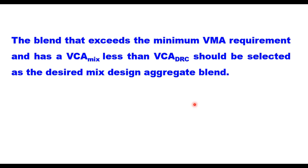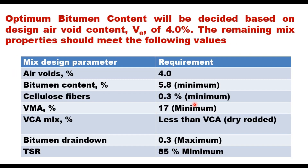Once aggregate gradation is decided, the next step is to determine the optimum binder content, selected at 4% design air voids. The remaining mix properties should satisfy: minimum binder content 5.8% (IRC SP79-2023; MORTH specification suggests 6.5%); cellulose fiber minimum 0.3%; VMA minimum 17%; VCA in mix less than VCA in dry rodded condition; drain down not more than 0.3%; and tensile strength ratio at least 85%.